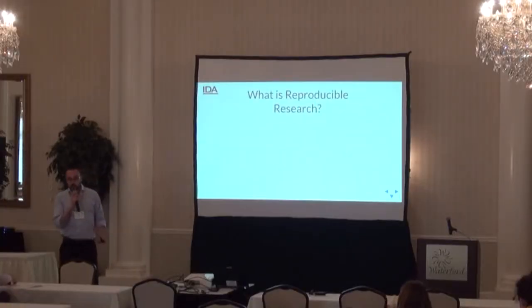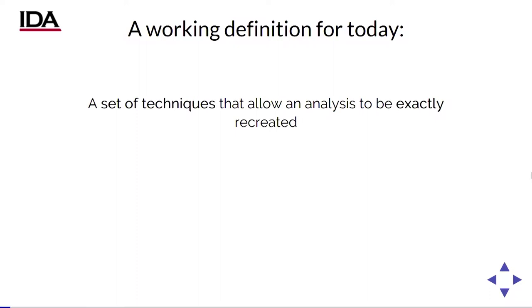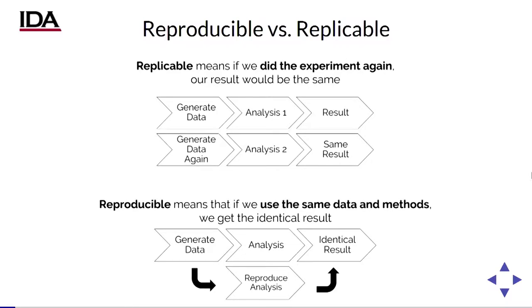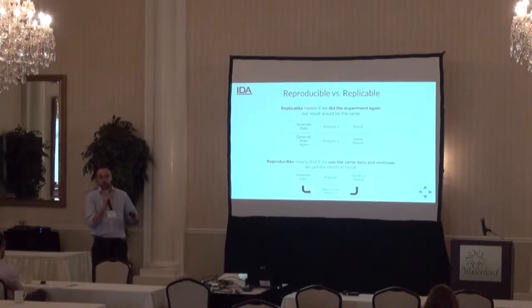So what do we mean by reproducible research? Today we're going to treat this as a set of techniques that allow you to exactly recreate one of your analyses. You'll find huge definitions online, but this is what we're going to work off of today. This is distinct from replicable. Replicable is a thing we care about in science — you run a test on your new drug or F35, find it's effective, publish results, run a similar test again, and hopefully get the same result. That is replicable.